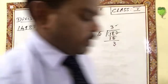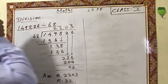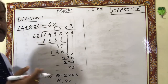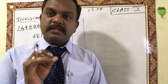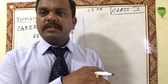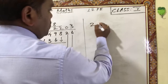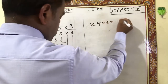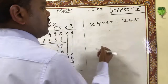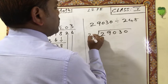Next, we are going to learn division by a three-digit divisor. For three-digit number multiplication tables, it will take some time — next class I will teach how to write three-digit number multiplication. Now the example: 29,030 divided by 248. Write the dividend first: 29,030 divided by 248.